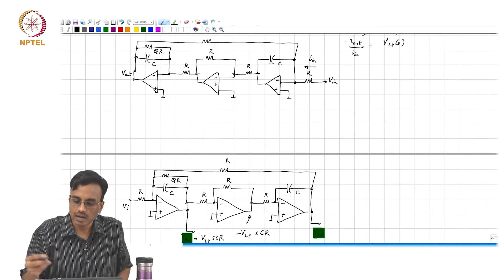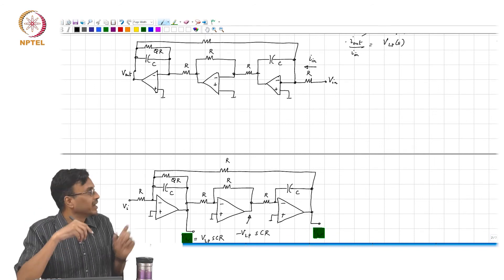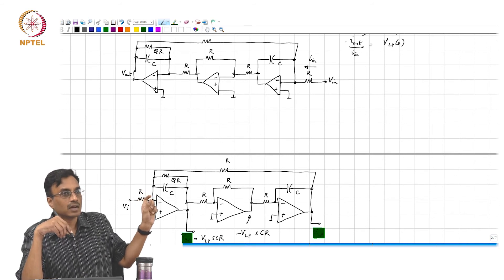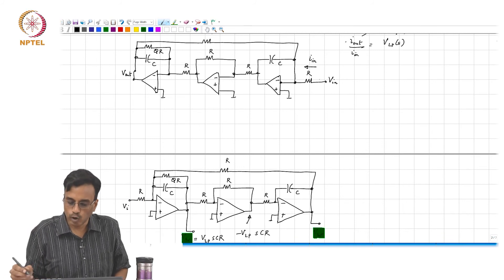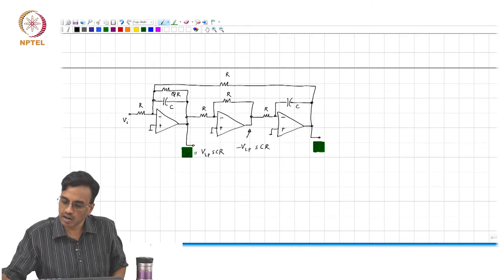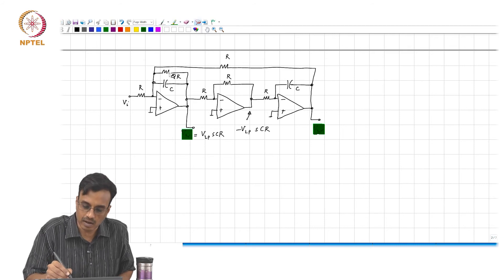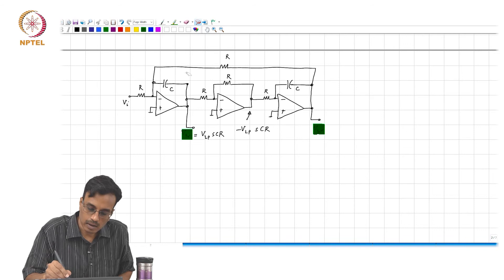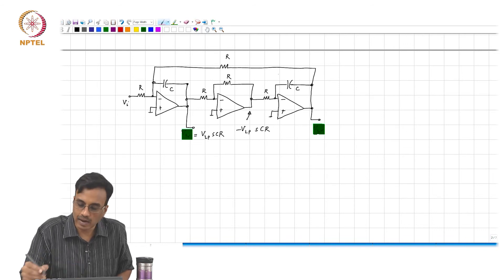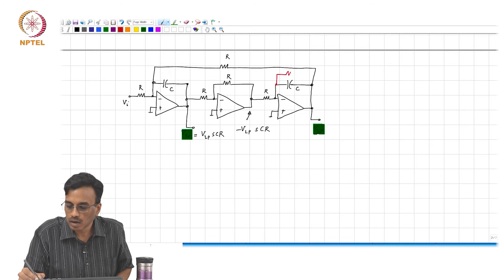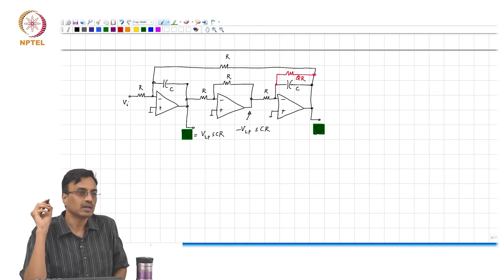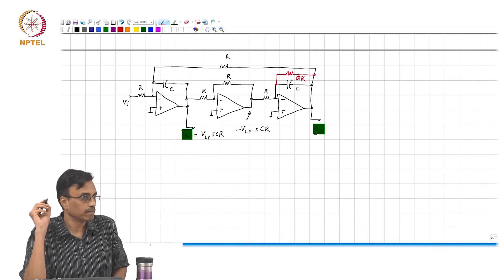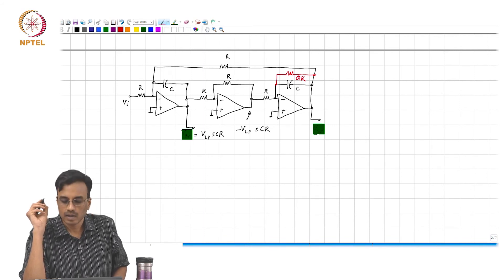So equivalently, this is saying that QR, the damping resistor, can be placed... As far as the low pass transfer function is concerned, it is not necessary to place the damping resistor here, though that is how we derived it. One could as well place the damping resistor here and this will also lead to the same low pass transfer function.